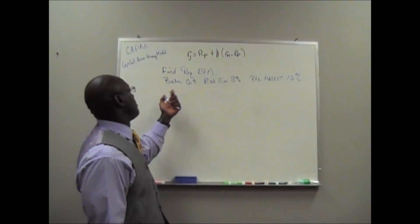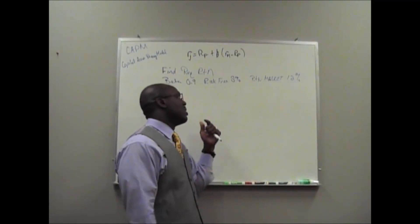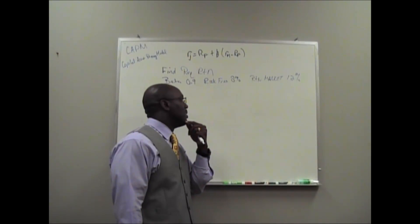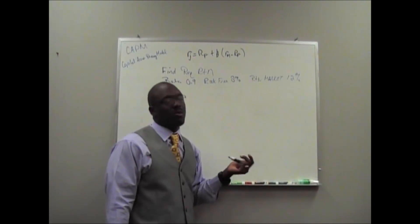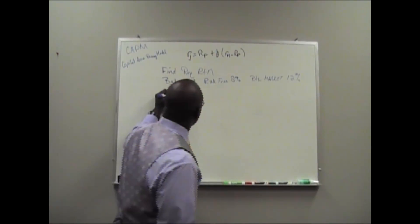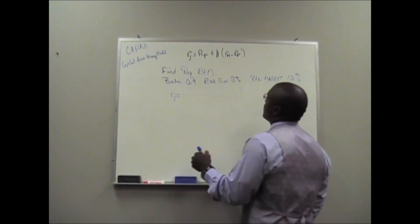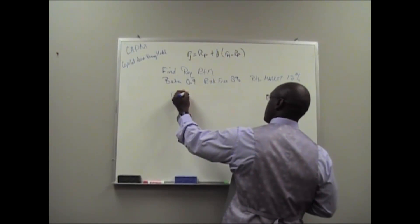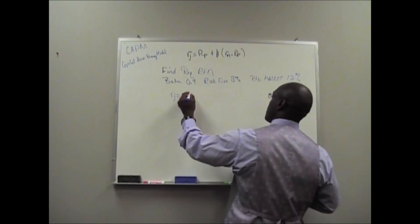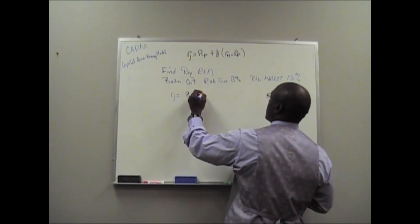We have a beta of 0.9, a risk-free rate of 8%, and a market return of 12%. That's to find the required return. So we just use the formula. We're looking for RJ. The risk-free rate is 8. I'll keep it as a whole, I don't do a percent, plus the beta.